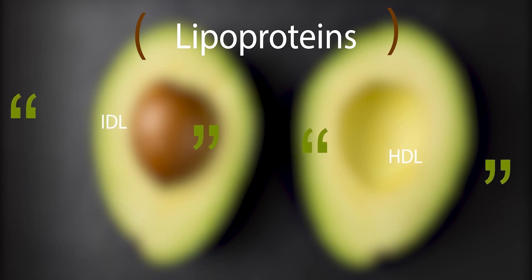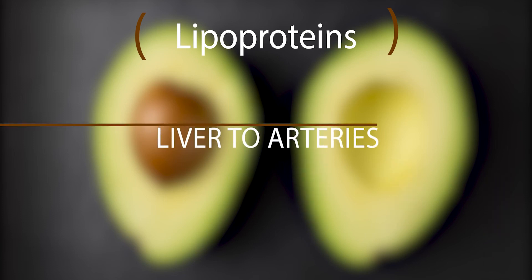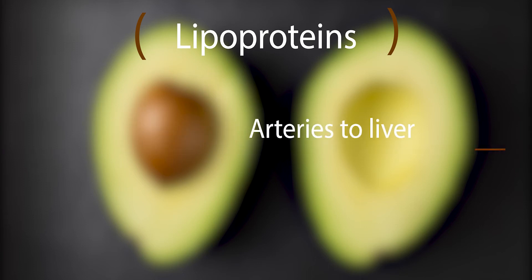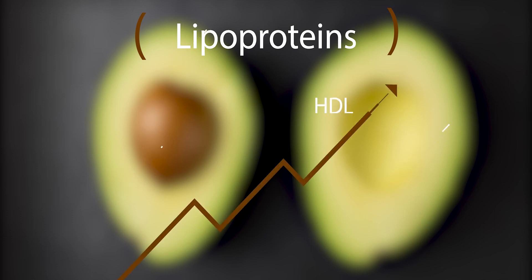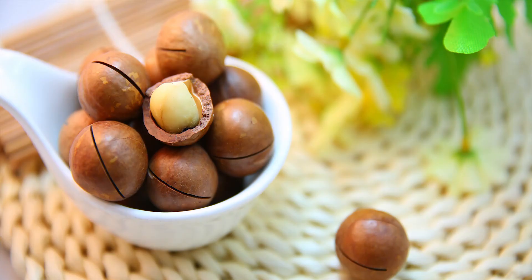The low-density lipoproteins transfer the fats from the liver to the arteries which, in time, can cause atherosclerosis. The high-density lipoproteins on the other side transfer the fat from the arteries to the liver. That's why we need a diet in which the unsaturated fats predominate.